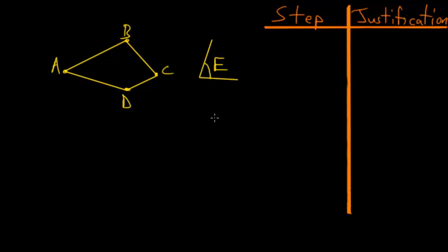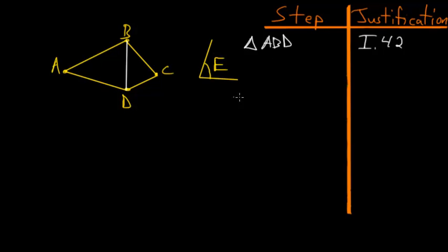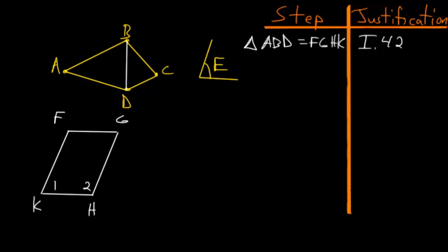To save space, I'll omit some simpler steps. For instance, we'll use Postulate 1 to connect points B and D without writing it down. By connecting B and D, we separate the figure into two triangles. I'll start by using Book 1 Proposition 42 to construct a parallelogram equal to triangle ABD and also containing angle E.